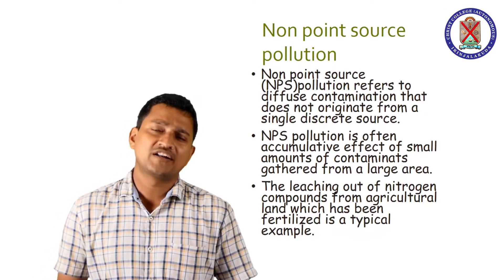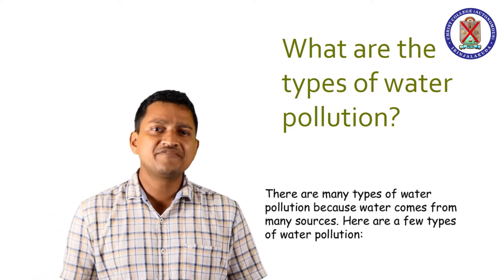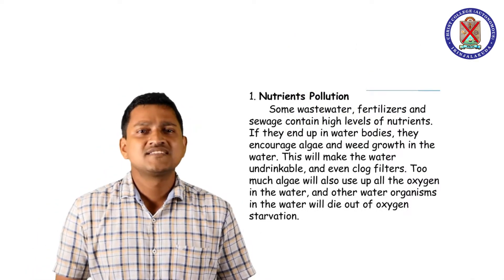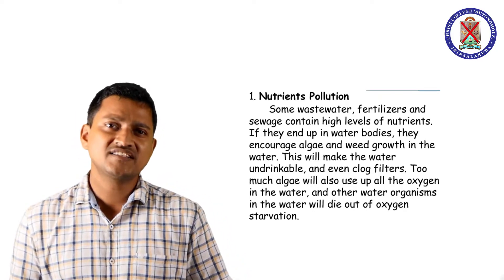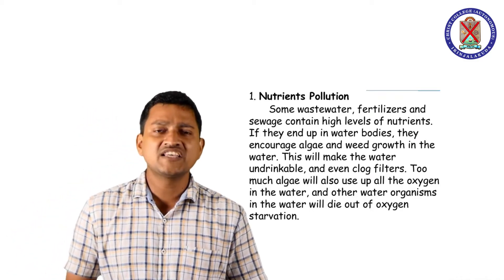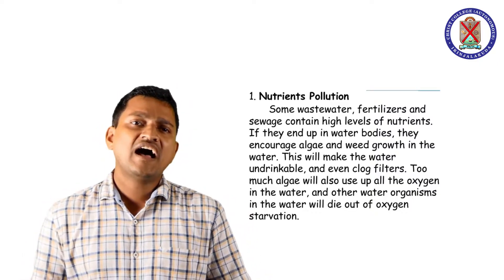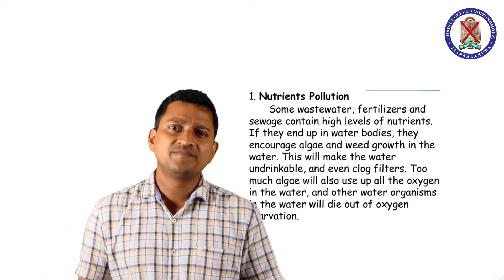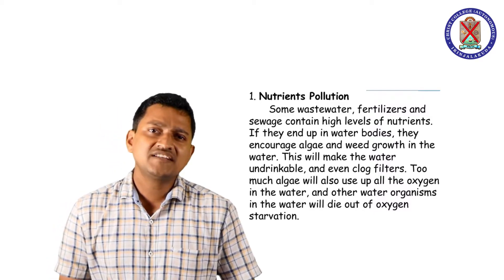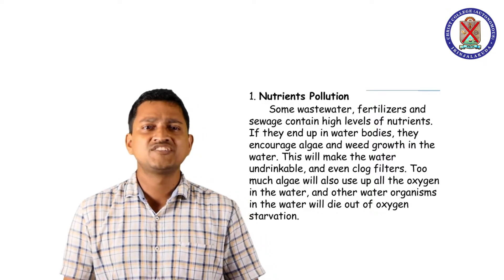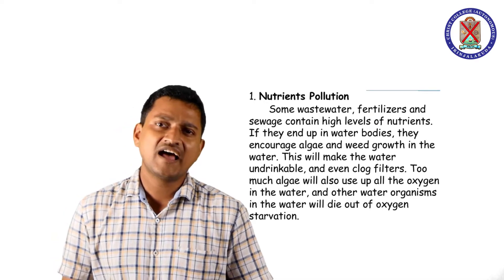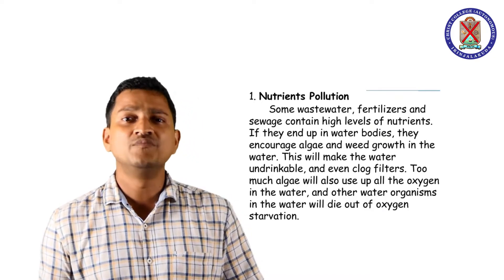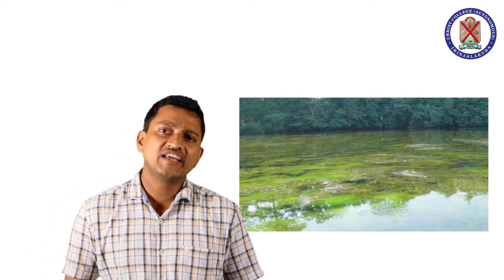There are many types of water pollution because water comes from many sources. The first type is nutrient pollution. Some wastewater, fertilizers and sewage contain high levels of nutrients. If they enter a water body, they encourage algae and weed growth, making the water undesirable and even clogging filters. Too much algae uses up all the dissolved oxygen in the water and other aquatic organisms die. This phenomenon is known as eutrophication, or cultural eutrophication, and the process is also known as algal bloom.